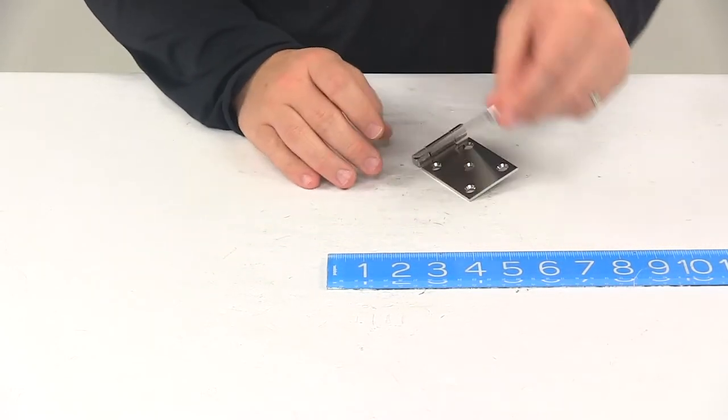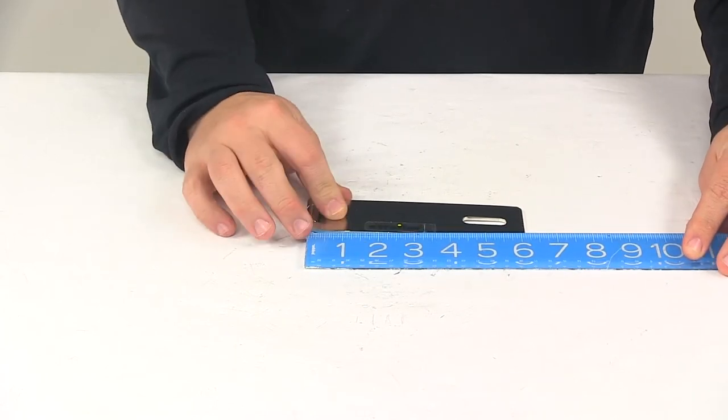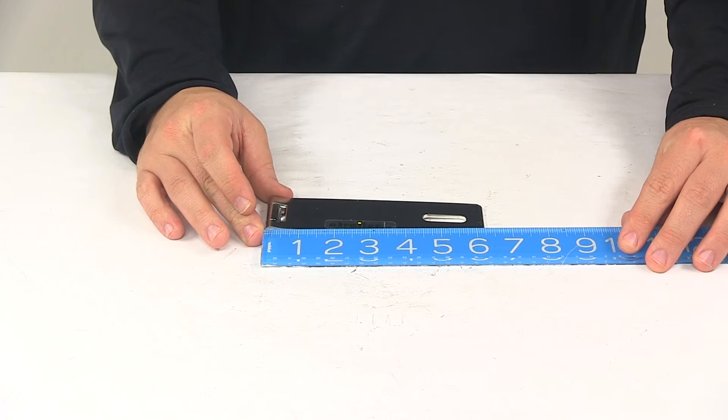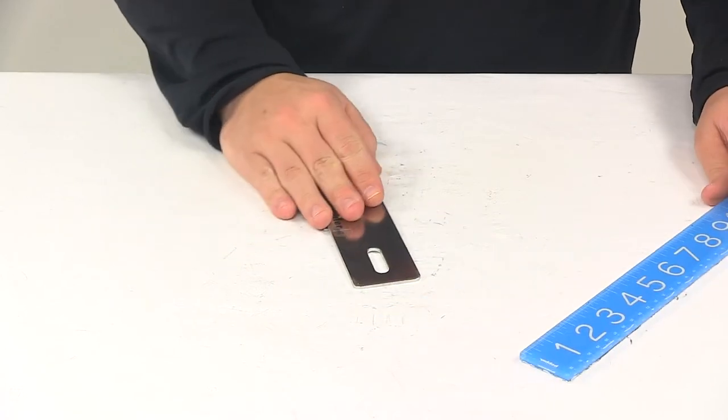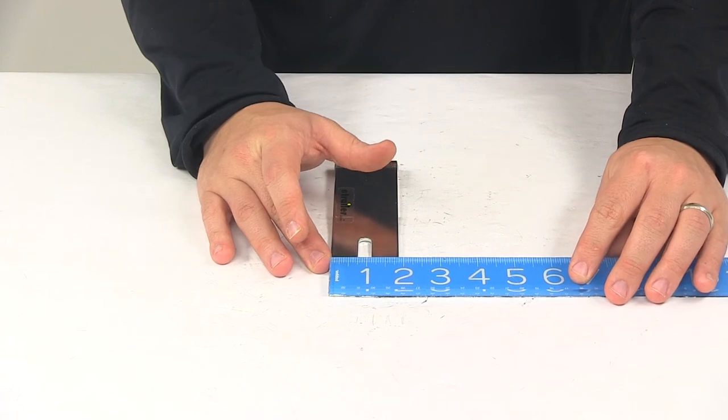If we fold it over like this, measuring from the back of the pin to the end of the unit, it's going to be about six and one-quarter inches long. The width is one and seven-eighths of an inch.